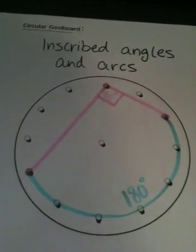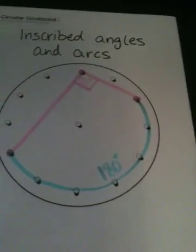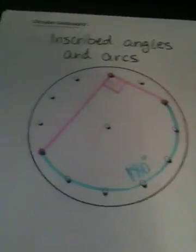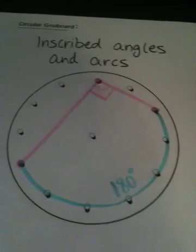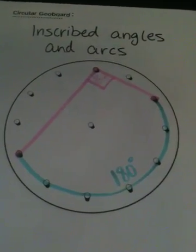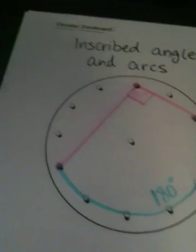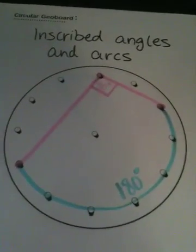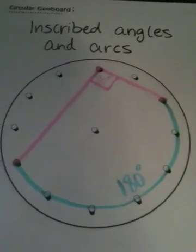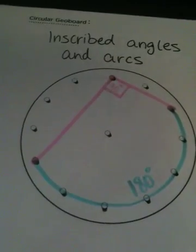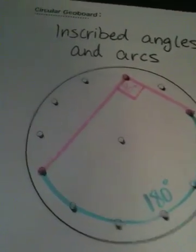Here we have one thing that we know about inscribed angles that we explained in our lessons, is the number of degrees in an inscribed angle is half the number of degrees in the arc that it intercepts. So here we drew a 90 degree angle using the circular geoboard, and we see that the arc it intercepts is 180 degrees.